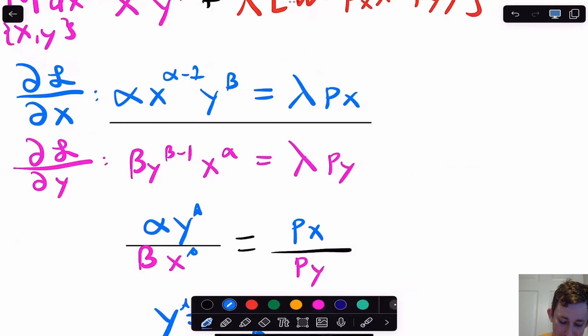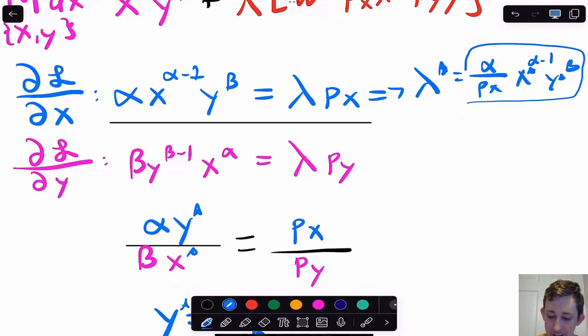If I go back to my first order condition, you can see that if I take this blue first order condition right here, this says that lambda star is alpha over px, x to the alpha minus one, y to the beta. It's a first order condition, so this is an x star and this is a y star. Once I have x star and y star, I can plug those into this expression. Of course, I could have done the same thing with the pink first order condition that I have below, going to get the same answer, it doesn't matter. When you're choosing which one you use for lambda star, pick whatever one's easiest, whichever one you're more confident in.